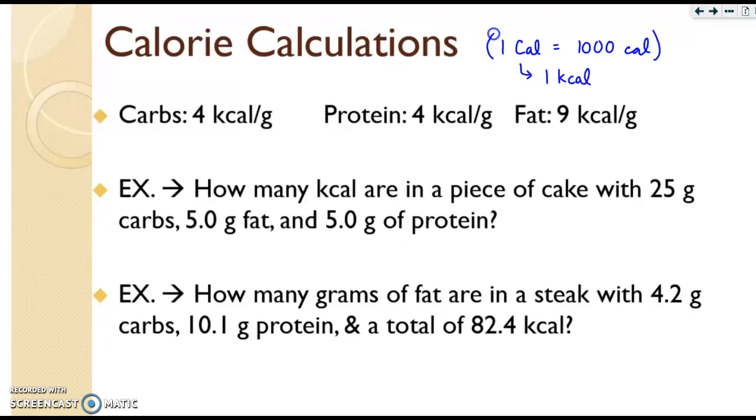Here we go. It says how many kilocalories are in a piece of cake with 25 grams of carbs, 5 grams of fat, and 5 grams of protein. All you have to do is take your 25 grams of carbs, multiply by 4. You're going to add that to your 5 grams of fat, which is multiplied by 9. And you're going to add that to your 5 grams of protein, also multiplied by 4. And you end up getting 165 kcals, which ideally, based on the sig figs, should round up to 170 kcals. These values here will be provided, so you don't need to memorize those.